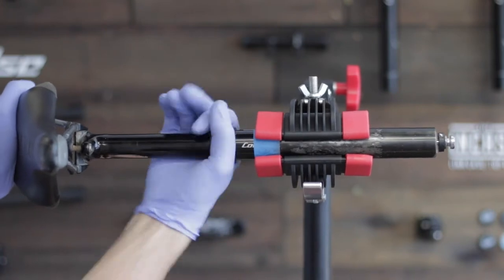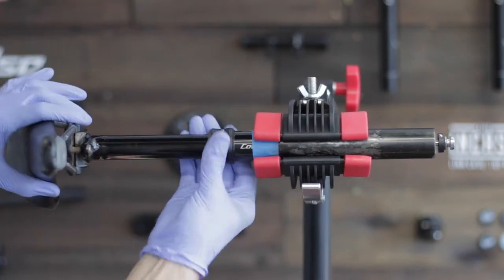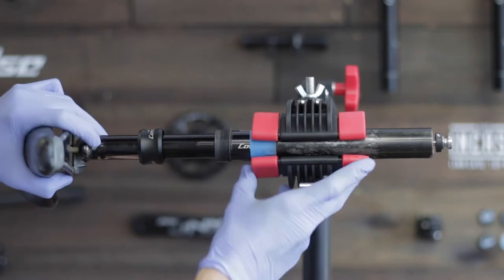Loosen the collar of the dropper post. This should just be hand tight. Slide out the stanchion.